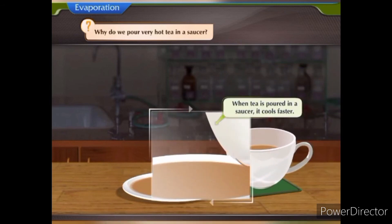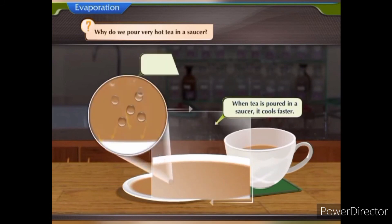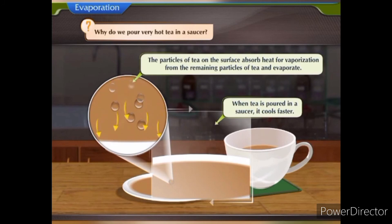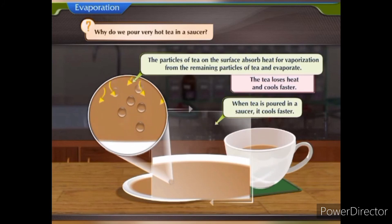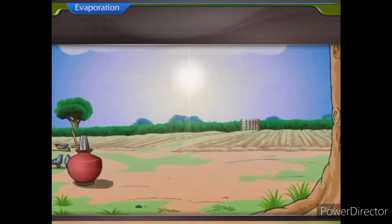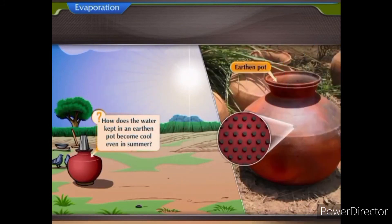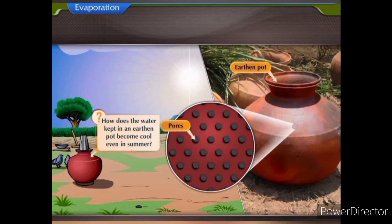When tea is poured in a saucer, it cools faster. Evaporation is a surface phenomenon. The particles of tea on the surface absorb heat for vaporization from the remaining particles and evaporate. The tea thus loses heat and cools faster. How does water kept in an earthen pot become cool even in summer? The earthen pot has small pores in its walls.